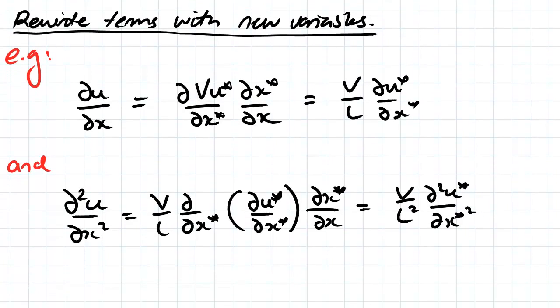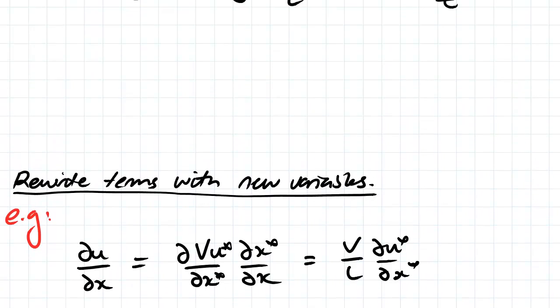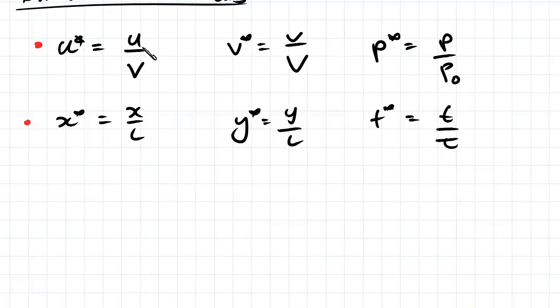And the next step is to then rewrite terms with these new variables. So something like the partial derivative of U with respect to X - if we go back up to U here, we can rewrite.